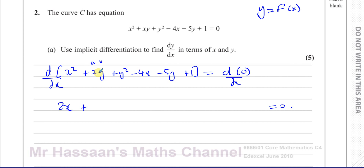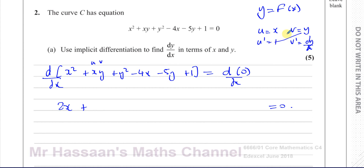For the term xy, it's a product of two separate functions, so we use the product rule. Let u = x and v = y. Then du/dx = 1, and dv/dx = dy/dx. Using the product rule: v·du/dx + u·dv/dx = y·1 + x·(dy/dx), which gives y + x(dy/dx).